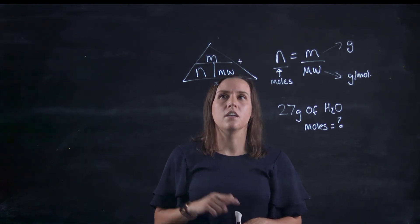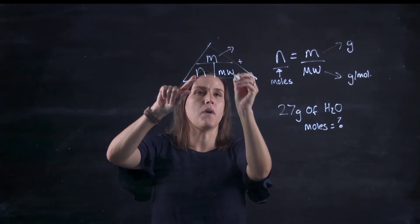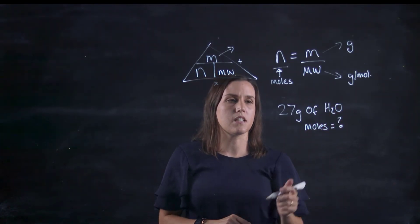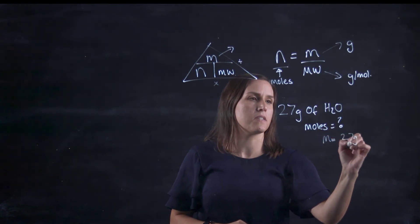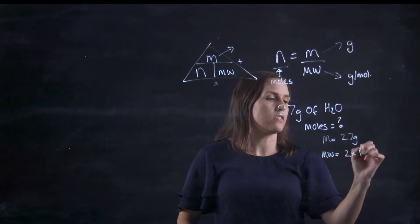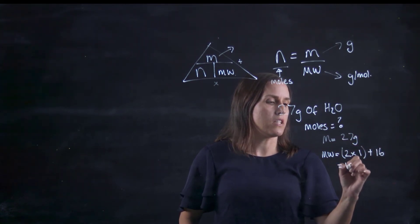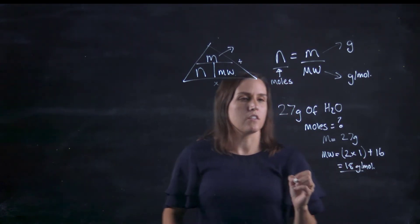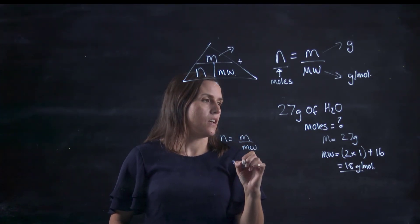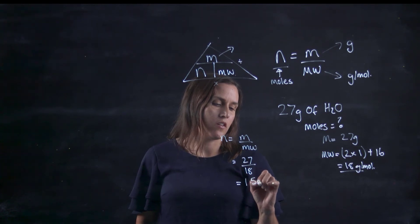I've got 27 grams of water, so looking at the triangle here, 27 grams would be the mass. The molecular weight I can work out from the chemical formula. My mass equals 27 grams, my molecular weight or molar mass is two times hydrogen which is one, and oxygen is 16, so I've got 16 plus 2 is 18 grams per mole. Therefore my number of moles equals 27 divided by 18, which gives me 1.5 moles.